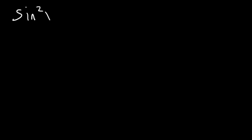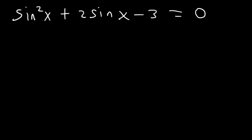Now let's focus on solving trigonometric equations by factoring. Let's start with this example: sine squared plus 2 sine x minus 3 is equal to 0. So how can we figure this out?